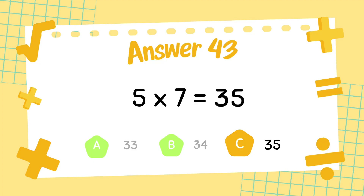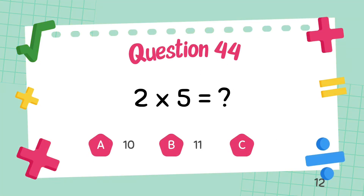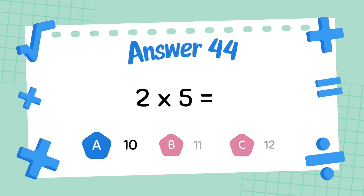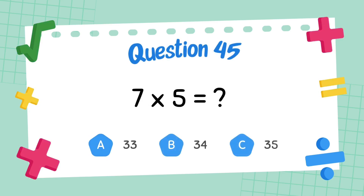The answer is 35. What is 2 multiply 5? The answer is 10. What is 7 multiply 5? The answer is 35.